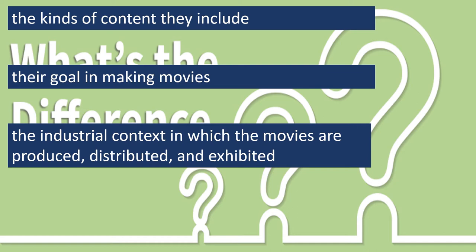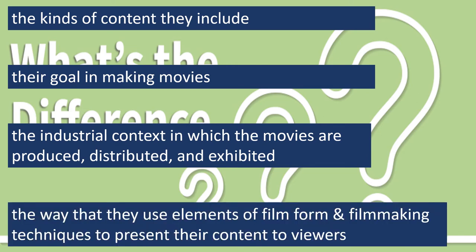Narrative films and documentary films are produced and distributed by entirely different companies. Studios that produce narrative films only produce and distribute narrative films, while the ones that produce documentary films only produce and distribute documentary films. Avant-garde films are produced, distributed, and exhibited entirely outside of the film industry and outside of any industrial context. The final thing that separates the three modes is the way they use the elements of film form and filmmaking techniques to present their content to viewers.